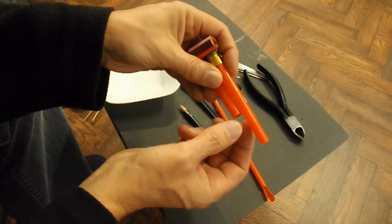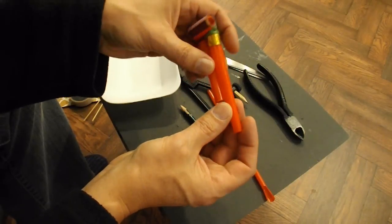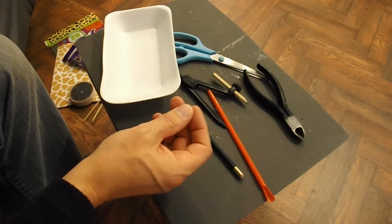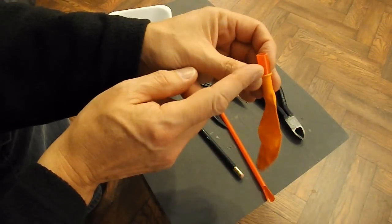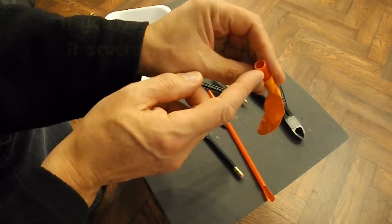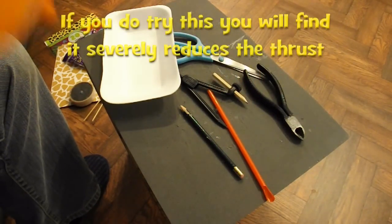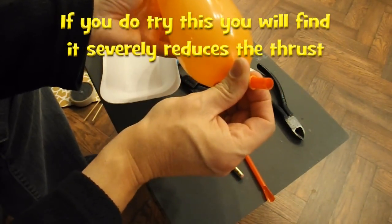And I've also cut this end off, because that end is the bit that makes the noise, and we don't need it to make a noise. Although, if you want to, you could just use that bit. That is the noise-making bit.